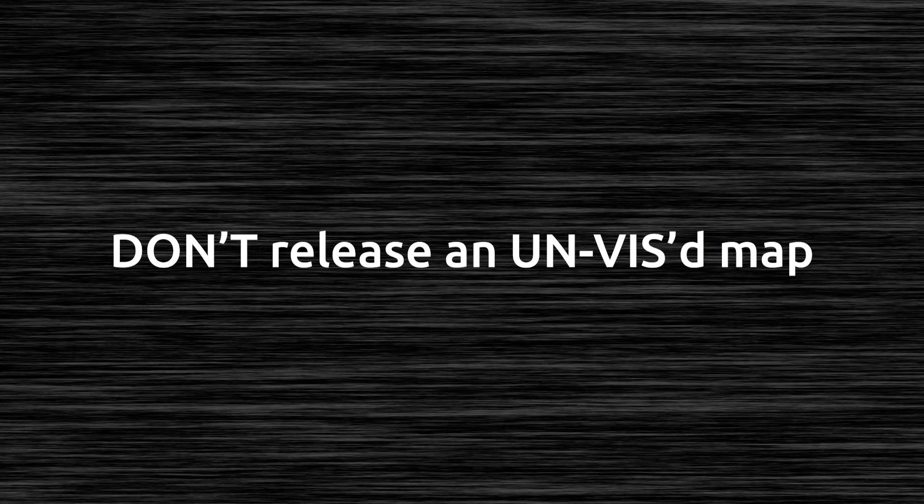There's a bunch of do's in this list, but there's one very important don't: don't release an unvised map. If you don't know what VIS is and what a properly vised map is, you should not be releasing a map. Make sure your map compiles correctly and that it runs BSP, VIS, and light, and there are no leaks in your map. The reason is performance and optimization. Even though there are new source ports like Quake Spasm and Mark V, it's an old engine — you do have to optimize your level.